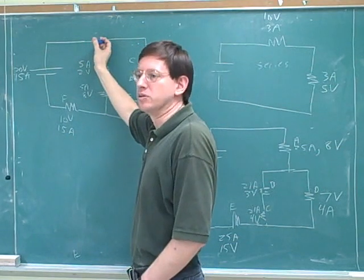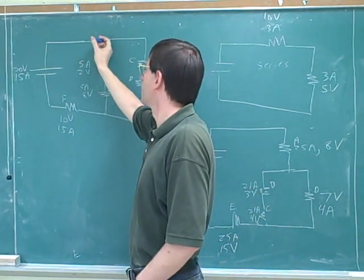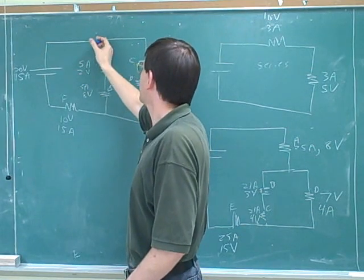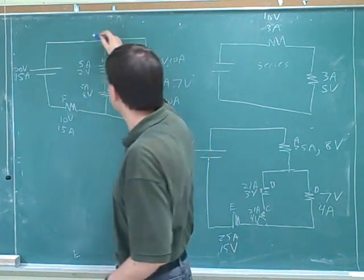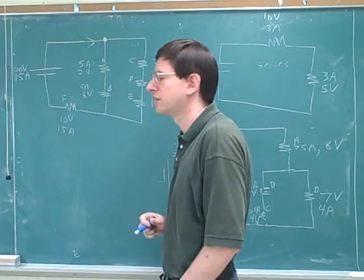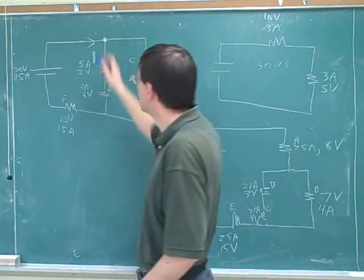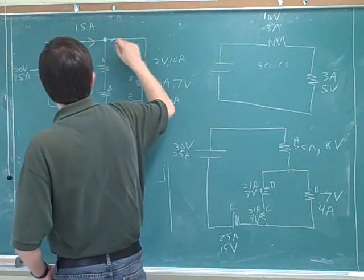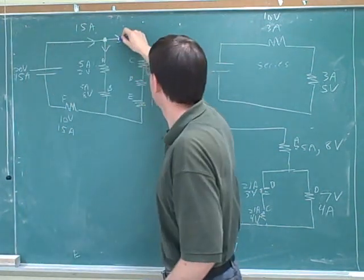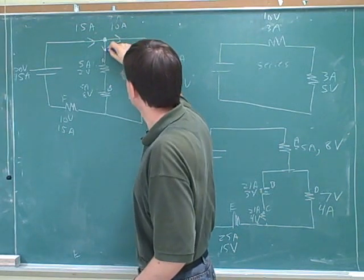So this is what we could call a node. A node is a point where we have more than one path conversion. What's the total amount of current coming into this node? What's the total amount of current going through this point? 15. And how much current is going through this point? 10. And through this point? 5.